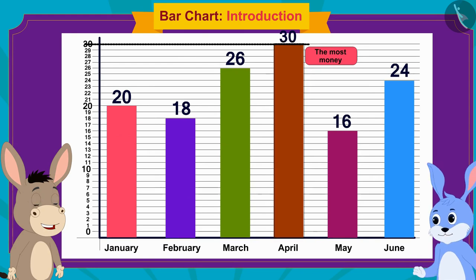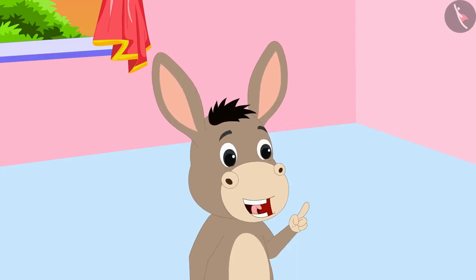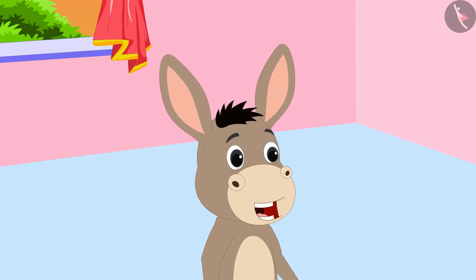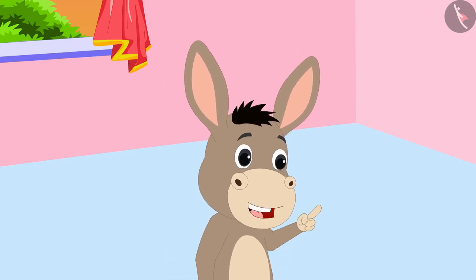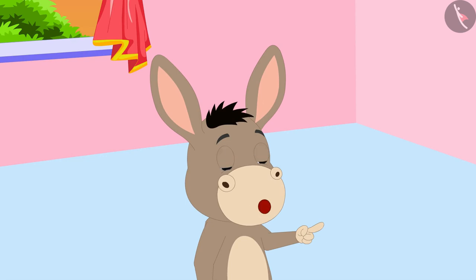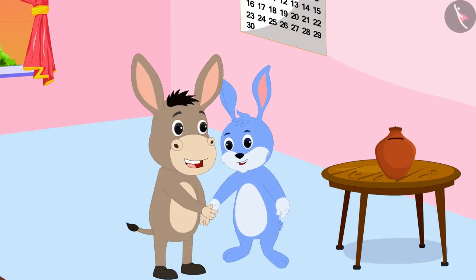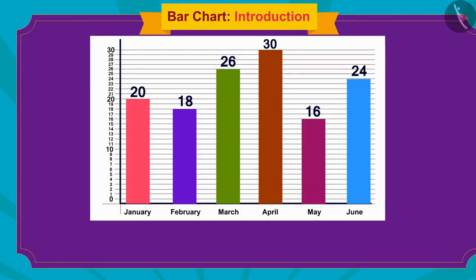Bholla said, 'Well done Bunny, you learned very quickly! Now continue saving money so that by the end of the year you can accumulate a lot.' Bunny promised Bholla that he would continue to save. Children, in this video we learned about bar charts. In the next video we will learn more about it through some interesting examples.